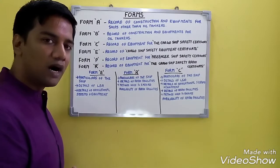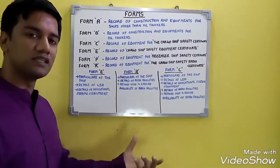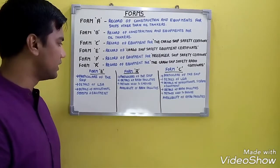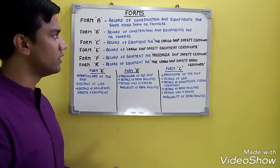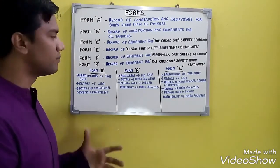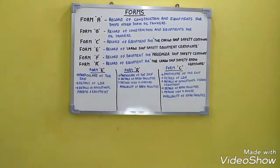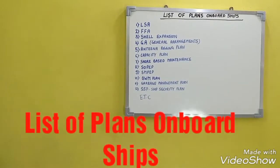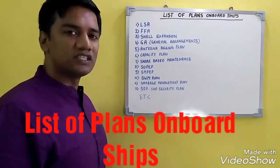Some of you may be asking why Form E and R exist separately when Form C represents everything included in both Form E and R. The answer is you can either carry Form C alone, or you can ask for separate forms — that is Form E, R, and C individually. These are important questions which are asked in the orals/exams.